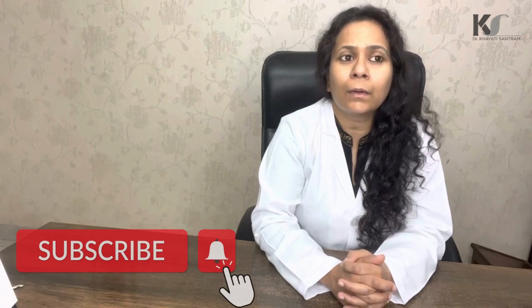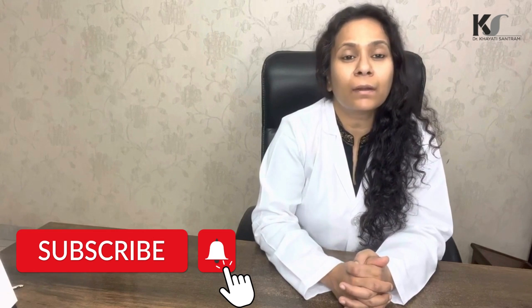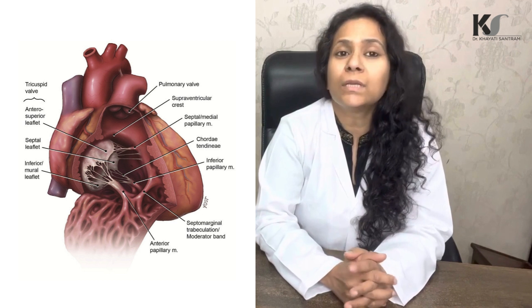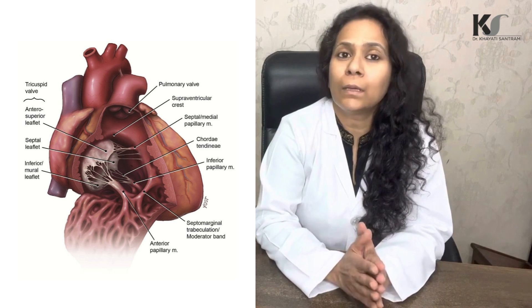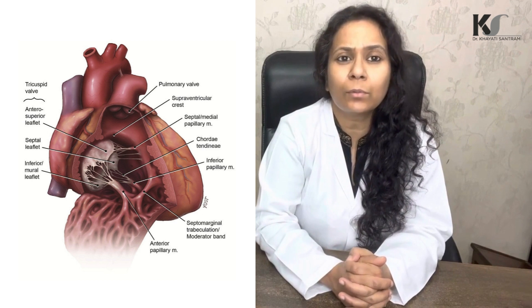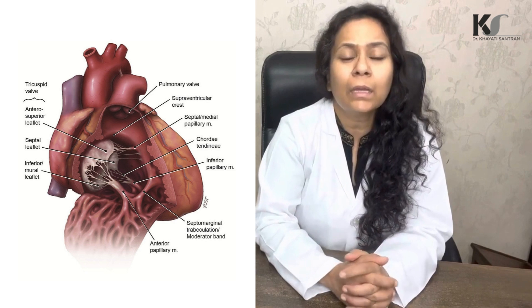In the ventricles, we see musculi pectinati, cord-like structures known as chordae tendineae, the moderator band, and the septomarginal trabeculae. This is how the gross anatomy of the heart goes, along with the physiology of how the heart pumps blood. This is what you should know about the heart. Thank you.